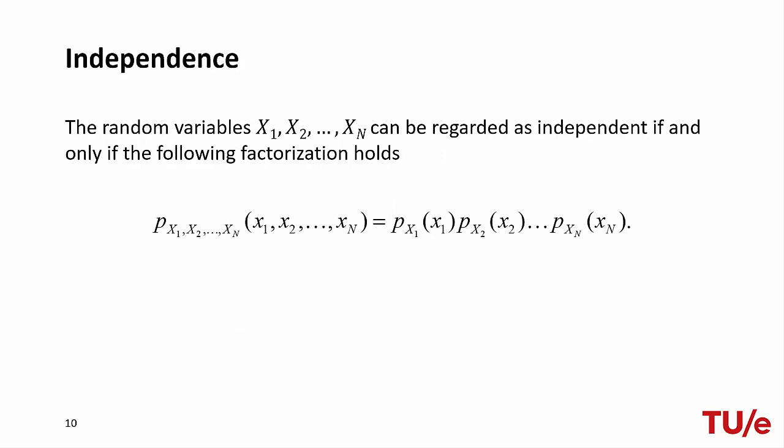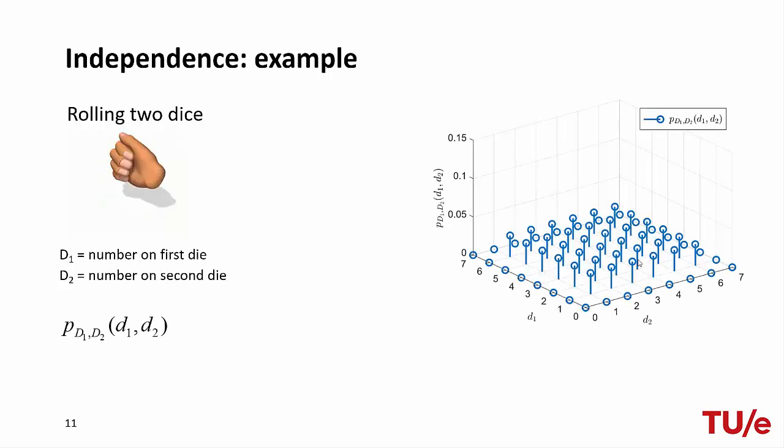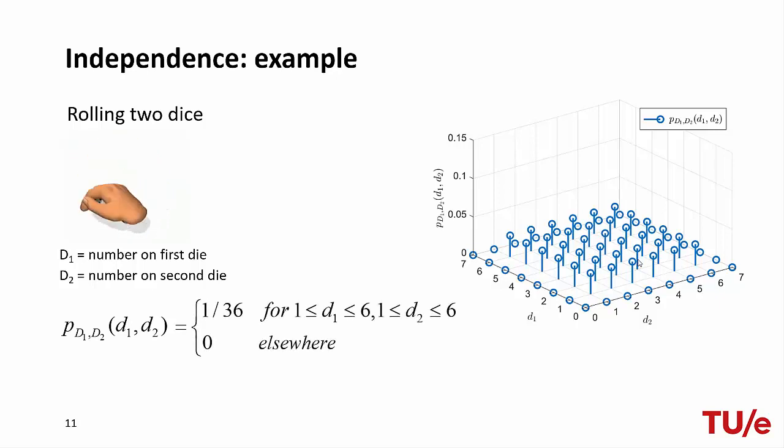In probability theory, two events are said to be independent if one event has no influence on the outcome of the other. We can extend the concept of independence to probability functions. Random variables can be regarded as independent when their joint PMF is given by the product of the PMFs of the single random variables. To verify this in practice, we can look at the example of rolling two dice. We found that the joint probability model of d1 and d2 was equal to 1 over 36 for any d1 and d2 in the range.